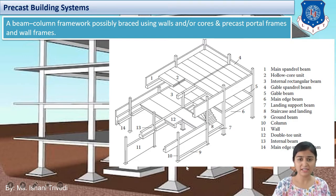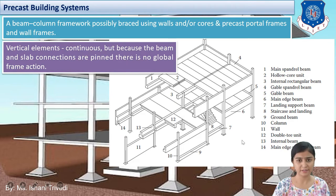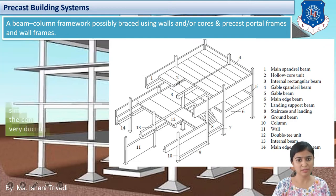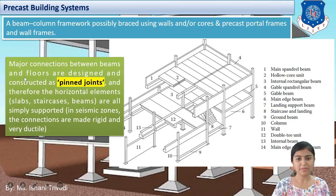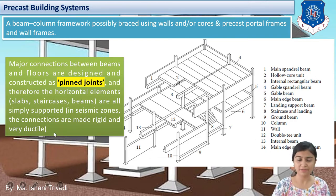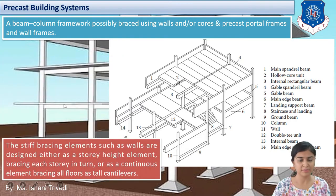This full system comprises a precast portal frame building system. These are the main components which you need to take care of and design for a precast building system. The vertical elements are continuous but because beam and slab connections are pinned, there is no global frame action. Major connections are provided between beams and floors and they are designed as pin joints. Therefore horizontal elements — slabs, stairs and beams — are simply supported. In seismic zones, the connection has to be made rigid while pinned or hinge joints can be avoided. The stiff bracing elements like walls are designed as a story height element bracing each story in turn, or as a continuous element bracing floors as tall cantilevers.